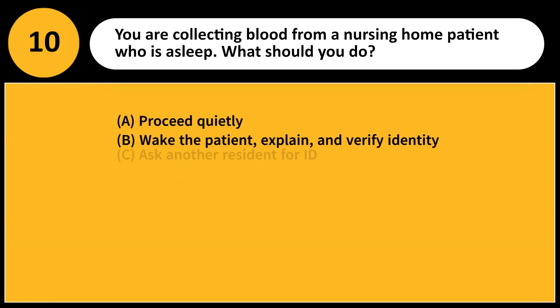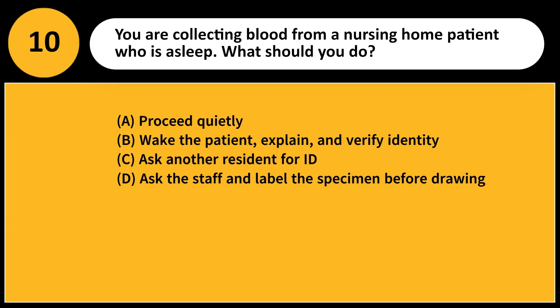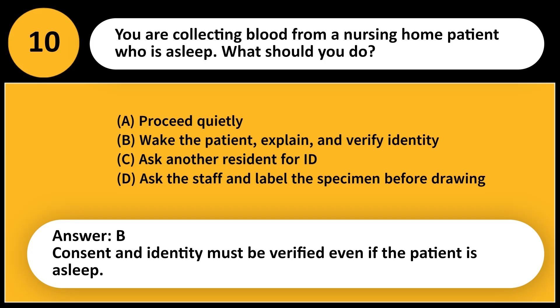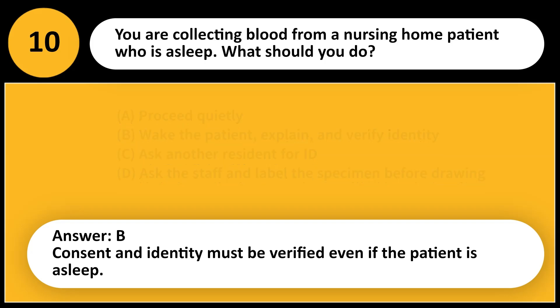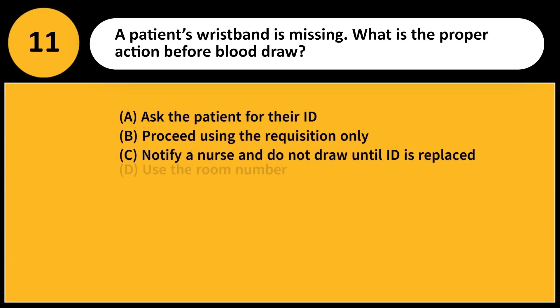You are collecting blood from a nursing home patient who is asleep. What should you do? A. Proceed quietly. B. Wake the patient, explain, and verify identity. C. Ask another resident for ID. D. Ask the staff and label the specimen before drawing. Answer: B. Consent and identity must be verified even if the patient is asleep.